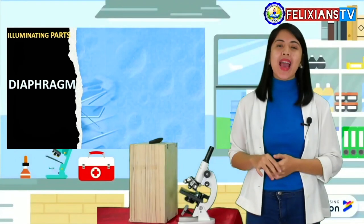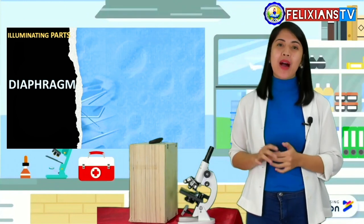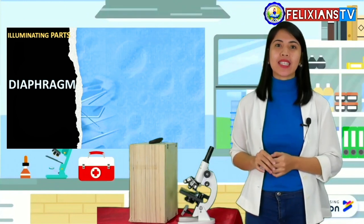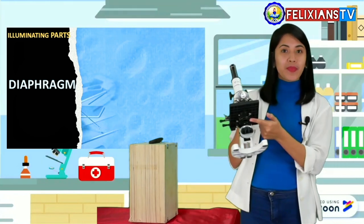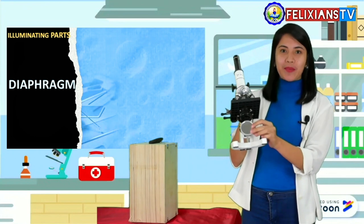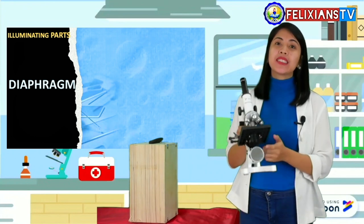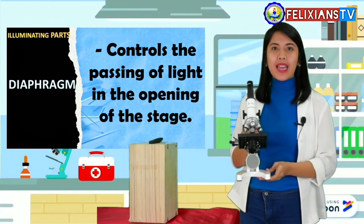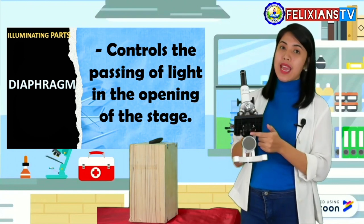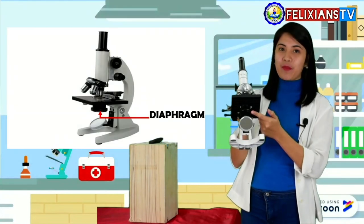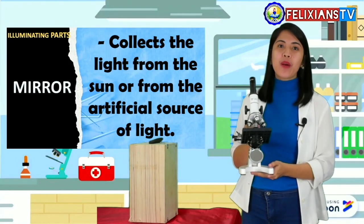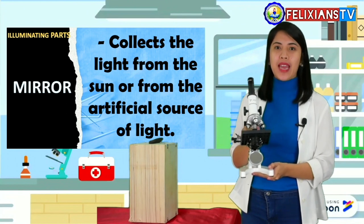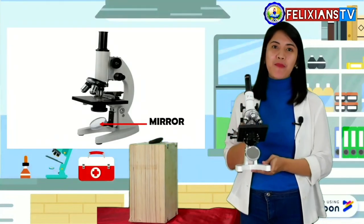Next, we have the illuminating parts. It provides and manages the light source to clearly see the image of an object. This includes the diaphragm and the mirror. So, the diaphragm controls the passing of light in the opening of the stage. This is the diaphragm. And the mirror collects the light from the sun or from the artificial source of light. And these are the illuminating parts.